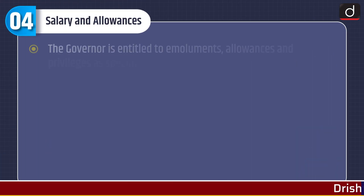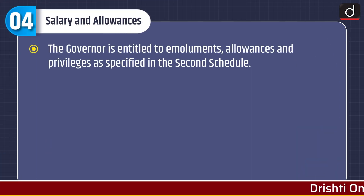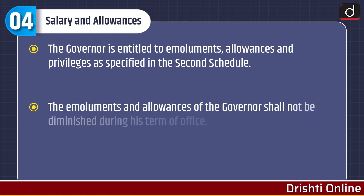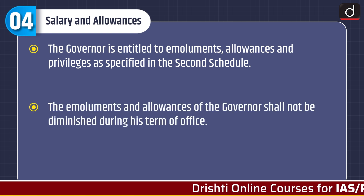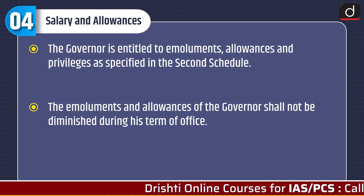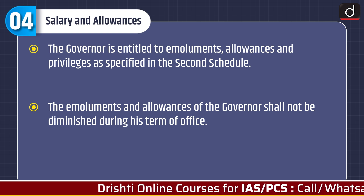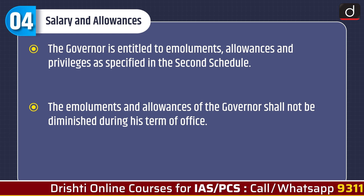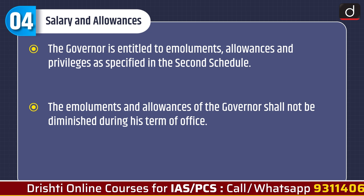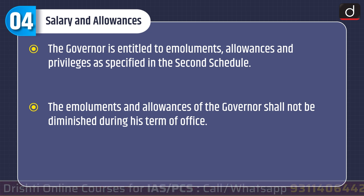If we talk about salary and allowances, the governor is entitled to emoluments, allowances and privileges as specified in the Second Schedule. The emoluments and allowances of the governor shall not be diminished during his term of office.